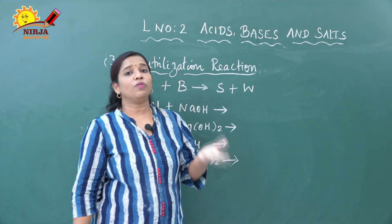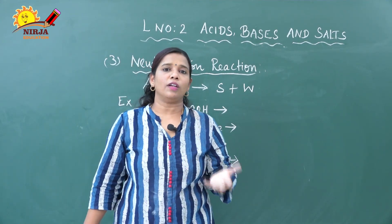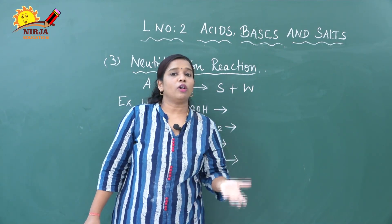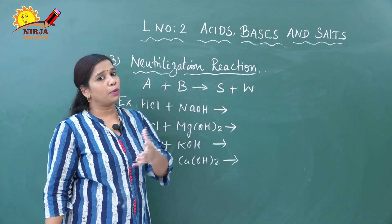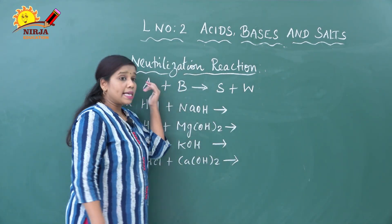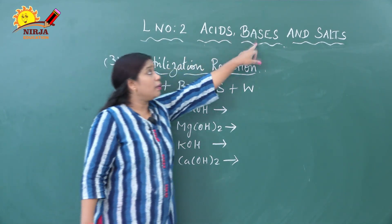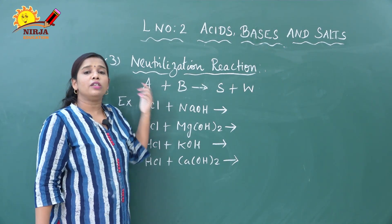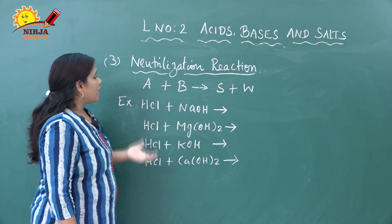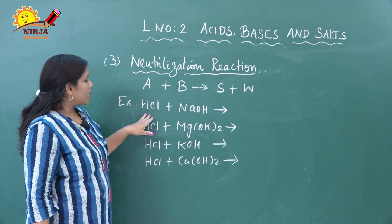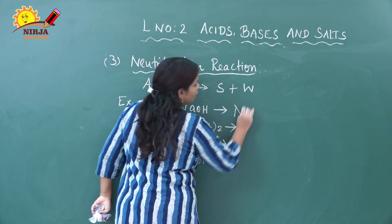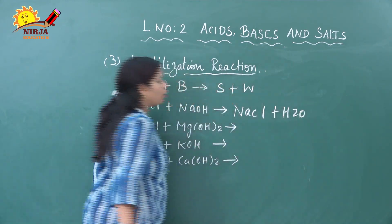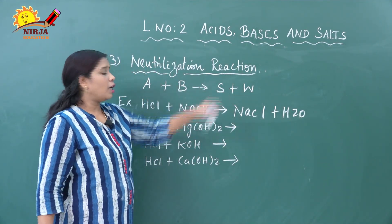In the previous reactions also we get salt as a byproduct — when metal reacts with acid it produces salt, and when metal bicarbonate or hydrogen carbonate reacts with acid it also produces salt. But here acid and base react together to produce salt, and that's why this reaction is called neutralization. For example, hydrochloric acid reacts with sodium hydroxide to produce NaCl plus water — the two byproducts being salt and water.